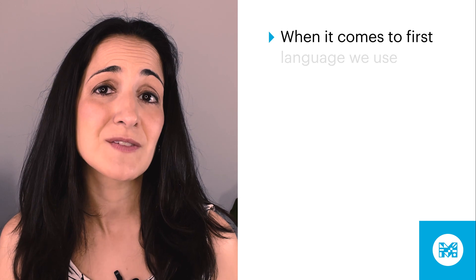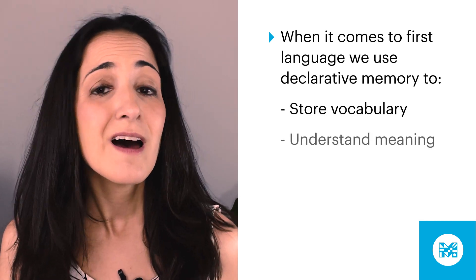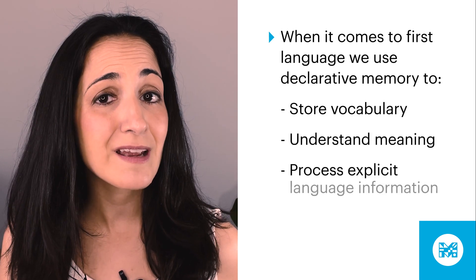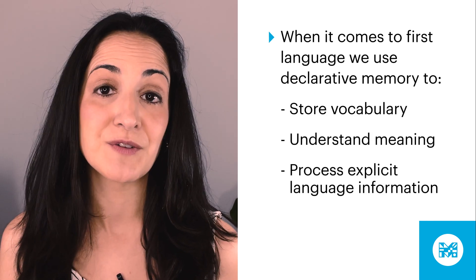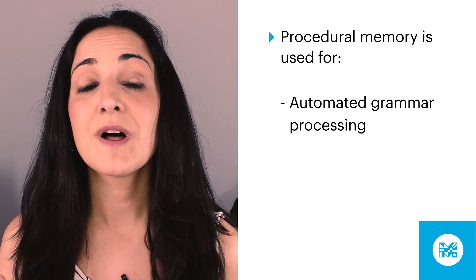When it comes to first language, studies of the brain have shown that we use declarative memory parts of our brain to store vocabulary, understand meaning, and process explicit language information, while we use procedural memory for automated grammar processing. So while the explicit rule for forming the past tense in English — add -ed — is stored in your declarative memory, the ability to use that rule fluently and without thinking about it relies on procedural memory.